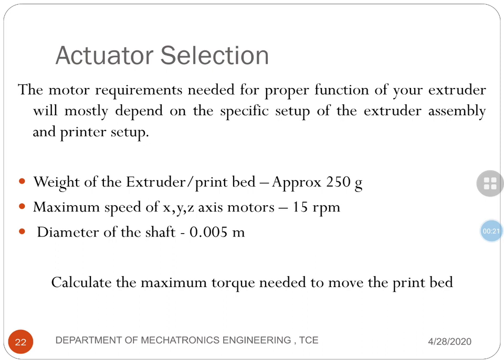The weight of the extruder for the motors to drive is considered to be approximately maximum 250 grams. Maximum speed of the x-y-z axis motors is 15 rpm, and the diameter of the shaft is 0.005 meters. This 15 rpm is taken from 0.1 mm per second printing speed, so the motors should drive at a minimum of 15 rpm. This varies printer to printer. You can increase this printing speed in the embedded software.